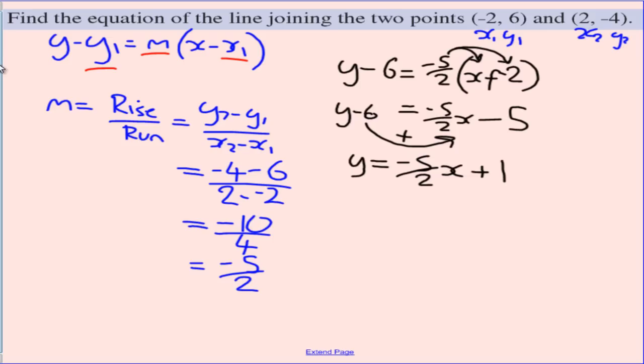So filling in the bits of information we need, we have y minus the y value of negative 4 equals our gradient minus 5 over 2 outside of x minus our x value of 2. So I'm going to have y plus 4 equals negative 5 over 2x, expanding that one. Then a negative times a negative is going to give me plus 5 halves multiplied by 2 is just going to give me 5.